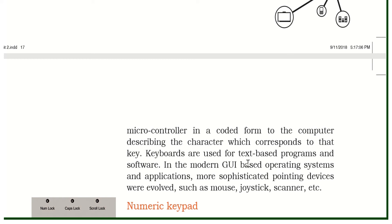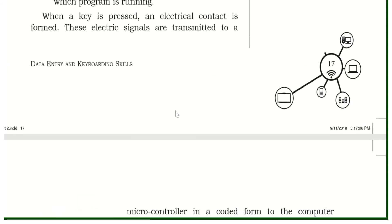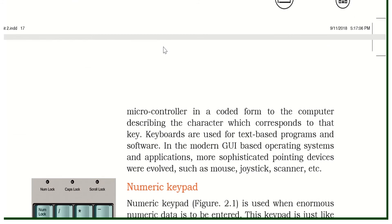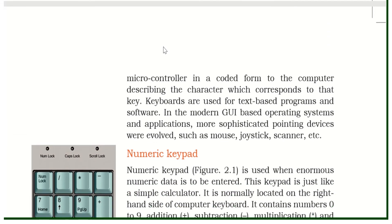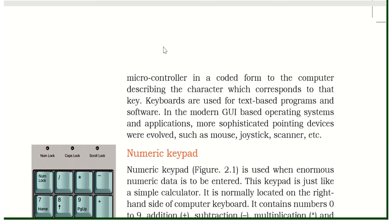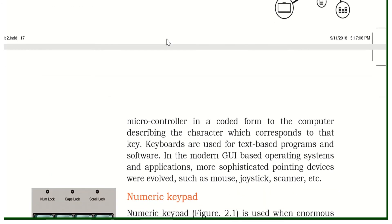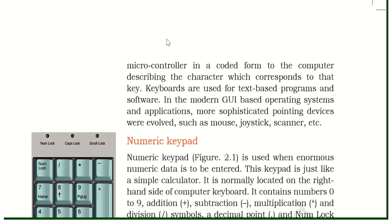The keyboard is text-based input. Modern GUI-based operating systems, applications, and pointing devices all use keyboard input. As we press the key, the electrical signal is released, transmitted to the computer in coded form. The computer understands it in digital language and gives meaning to the keystrokes, then displays it on the monitor.